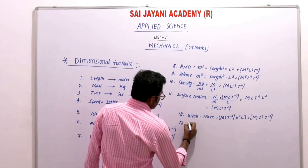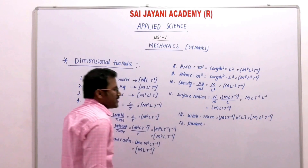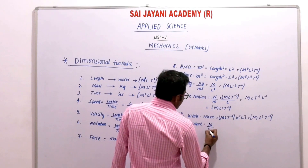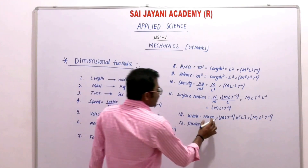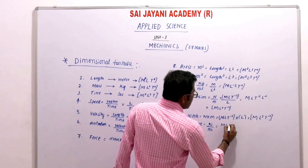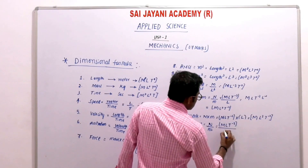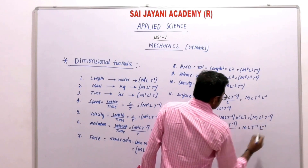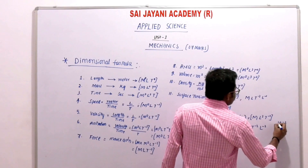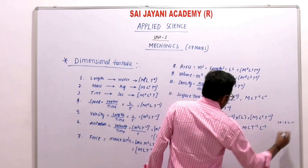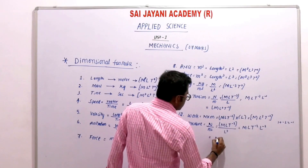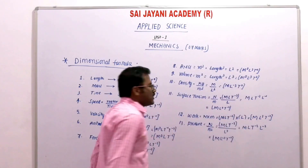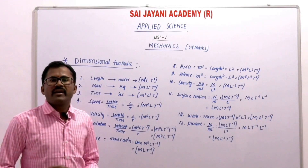Next is pressure. Pressure is defined as force per unit area. Force has the dimensional formula M L T⁻², and area has the unit meter square which is L². So pressure is M L T⁻² divided by L², giving L to the power 1 minus 2 equals L⁻¹. Therefore the dimensional formula for pressure is M L⁻¹ T⁻². These are some of the important dimensional formulas for various physical quantities.